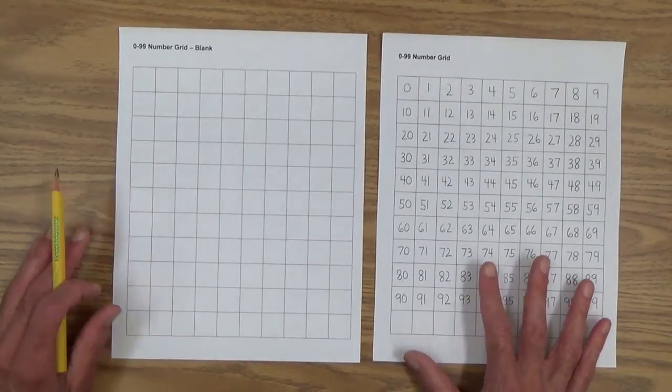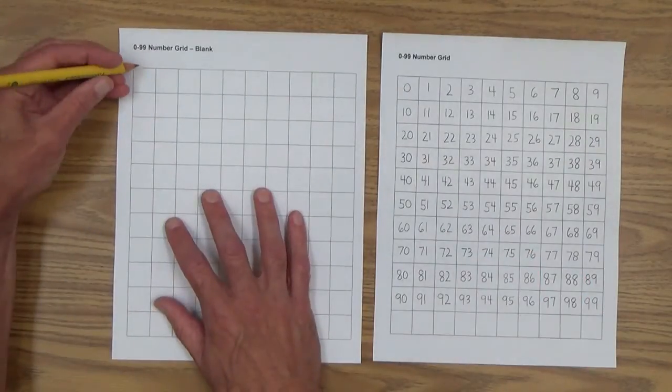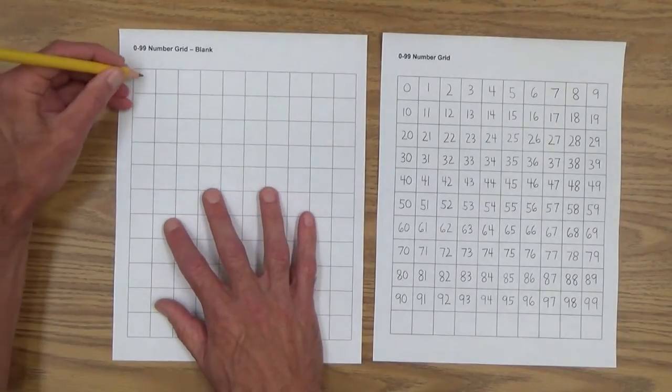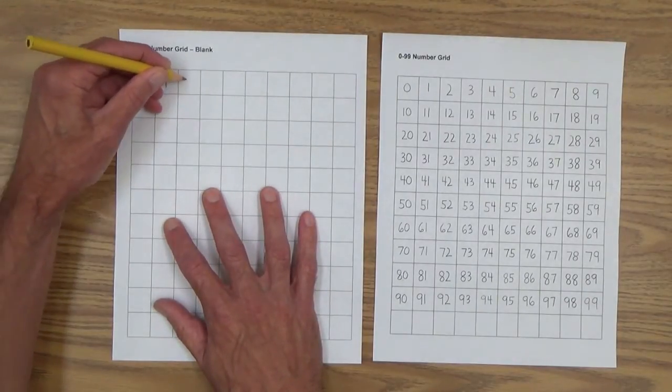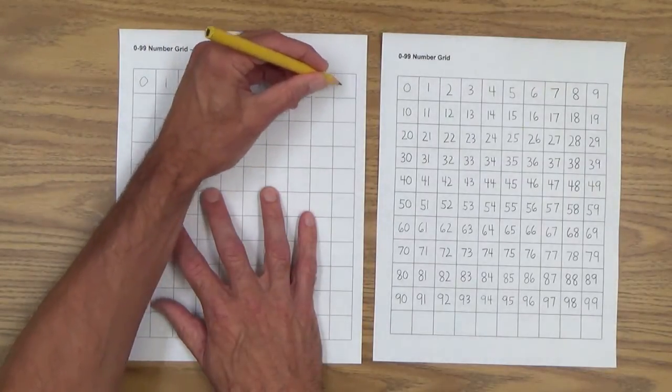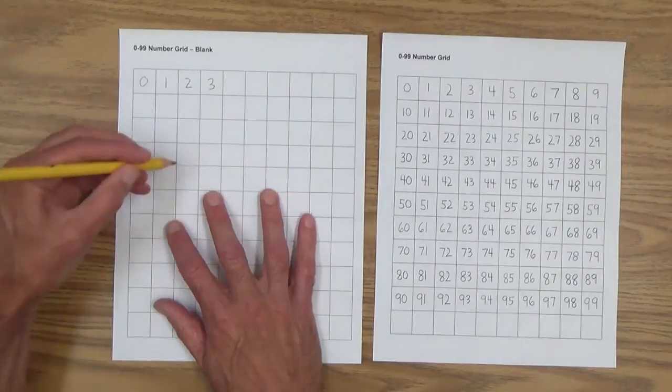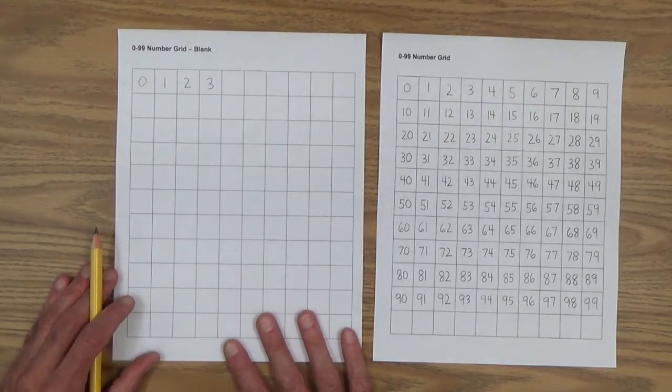So like I said, the first step is to have him or her copy it. You model to start out with, and you keep going. And when you get to 9 here, 10, all the way down, copying numbers 0 to 99.